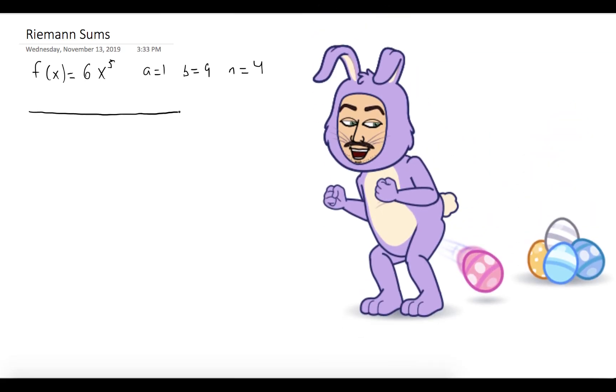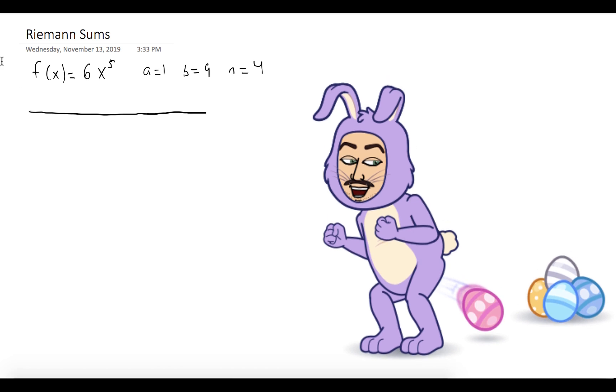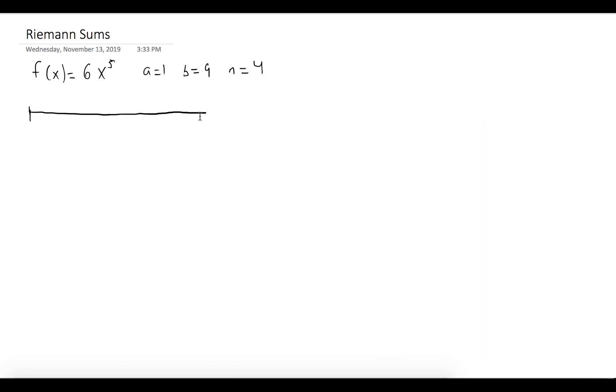All right, so we're going to hop right into this one. Start by drawing a number line. The left endpoint is 1 and the right endpoint is 9.